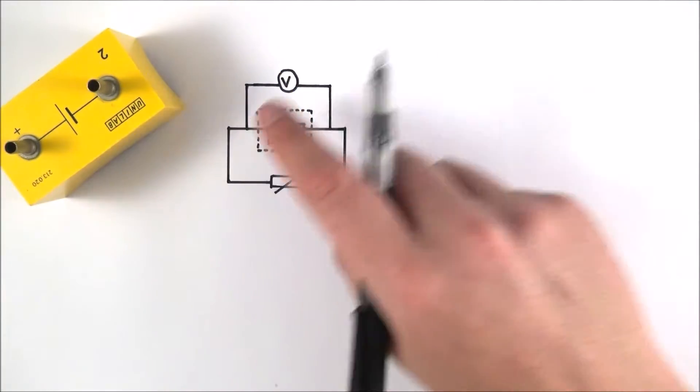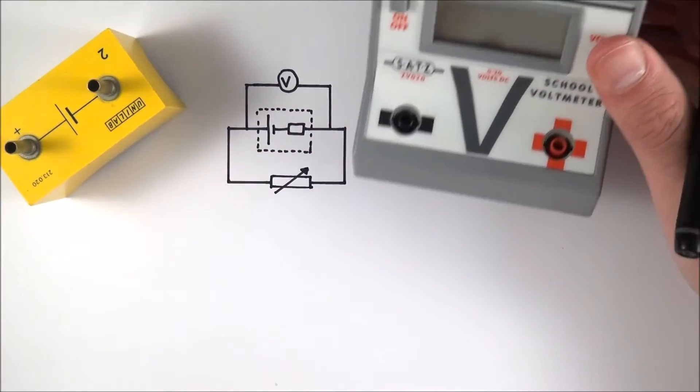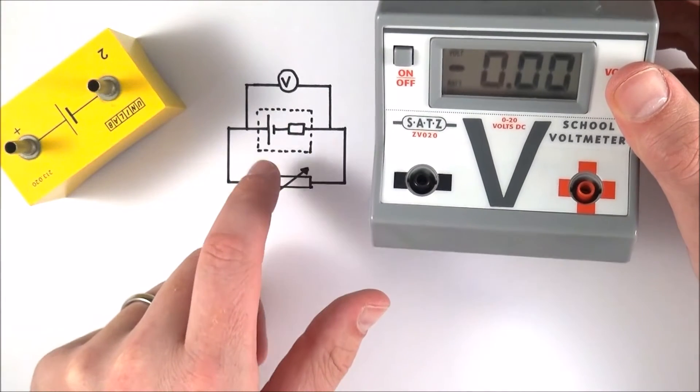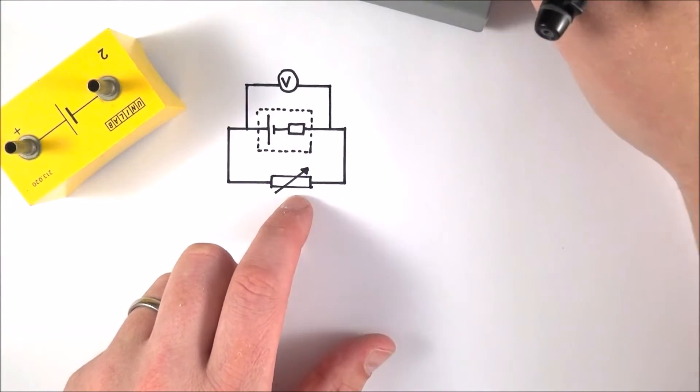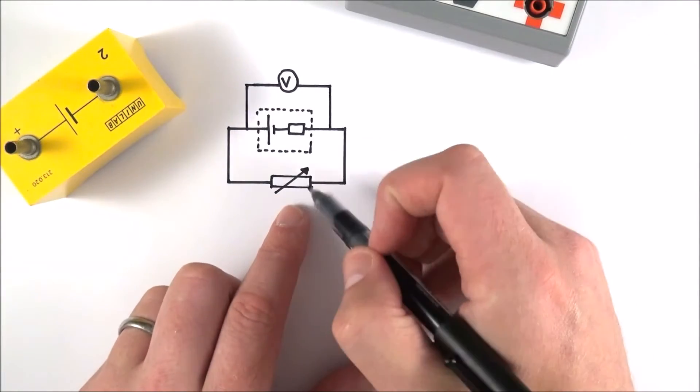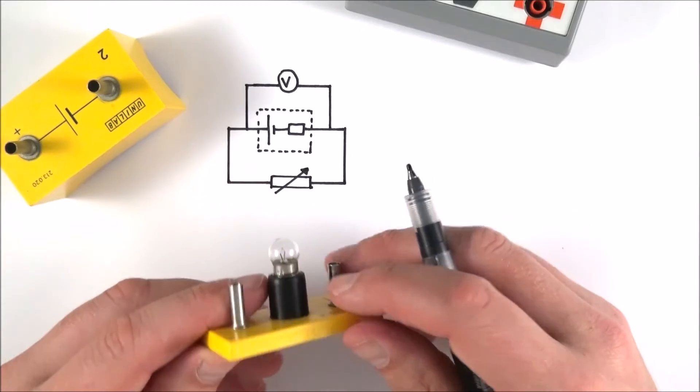We put a voltmeter across the terminals, and this is where we're measuring what we call the terminal PD. This is going to change as this is in a circuit where we actually have a load being applied. We can use a variable resistor, or you can use a different combination of lamps.